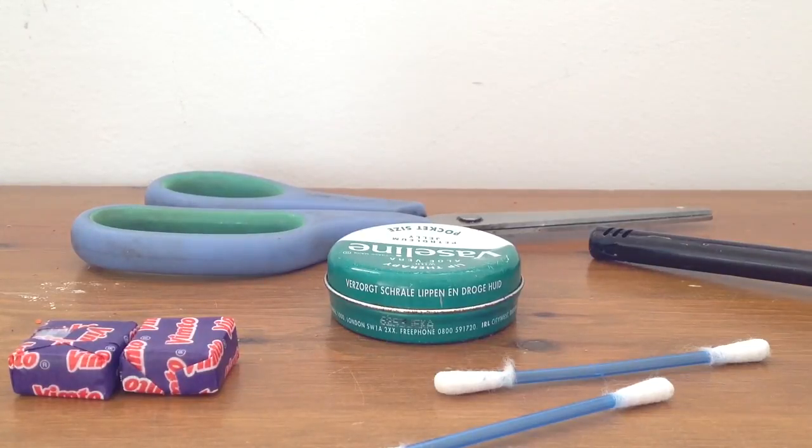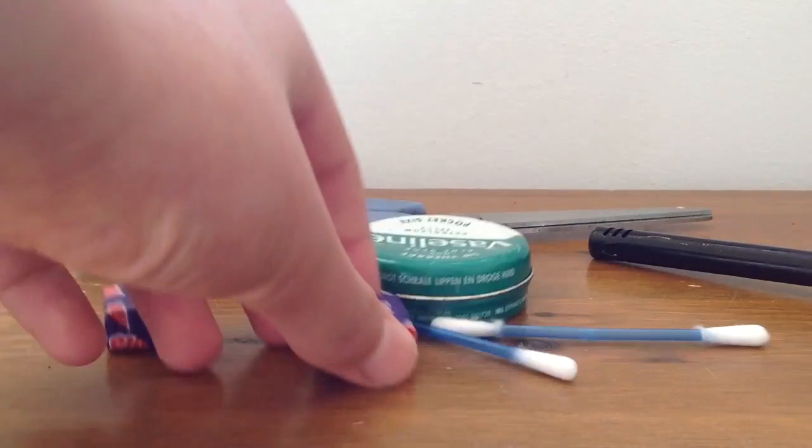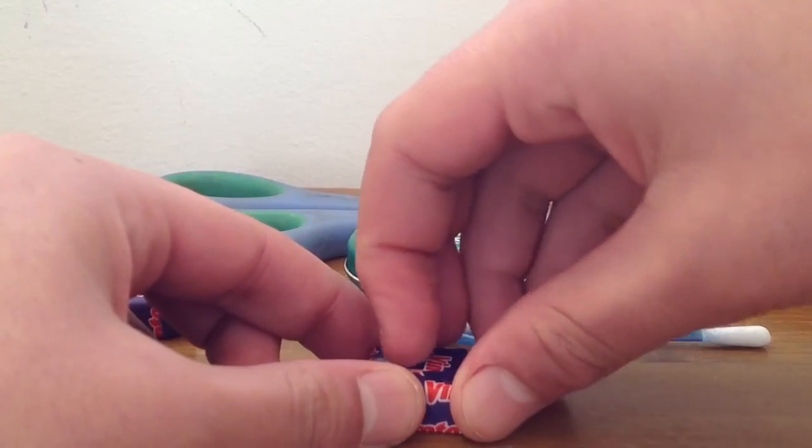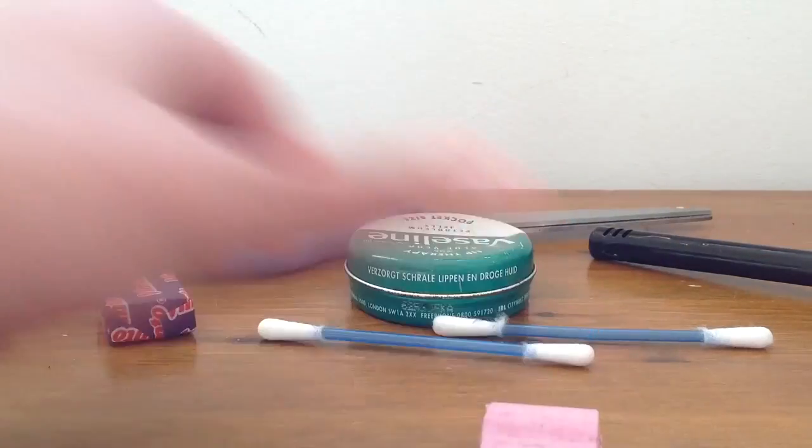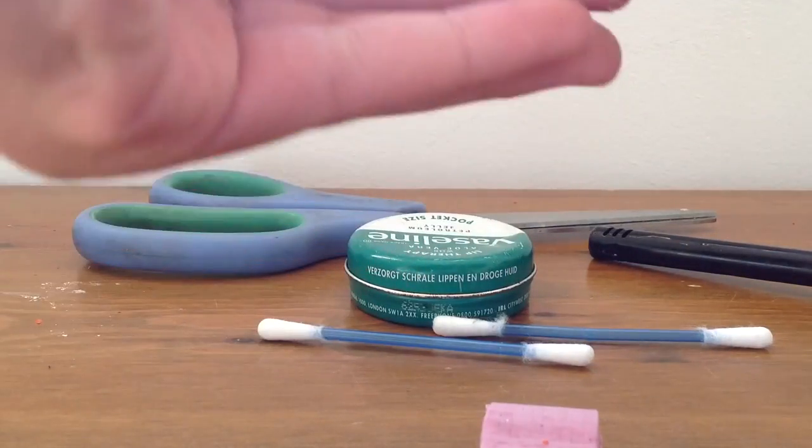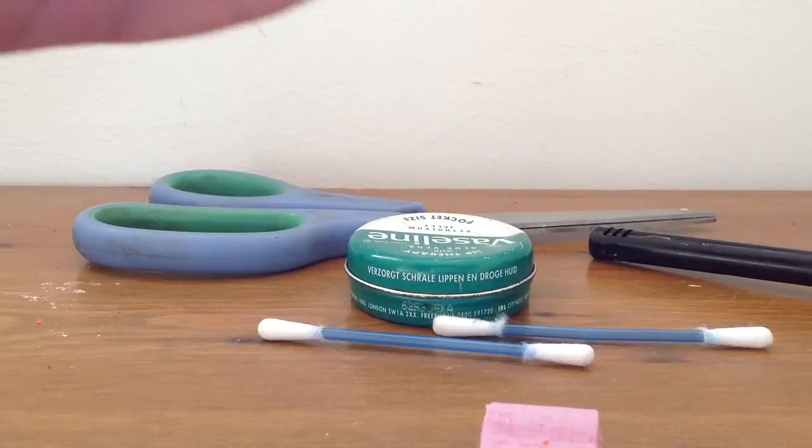In today's video I'll be showing you how to make a quick candle. What you do is you get a Vimto chewy sweet. I've just got a Vimto sweet, you only need one but I'm just going to use two just for extra protection.